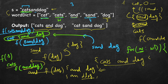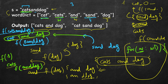The two solutions are 'cat sand dog' and 'cats and dog'. The loop continues for remaining words in the dictionary: 'and' — the first three characters of the input do not start with 'and', so skip. Next word — first four characters do not match. Next word — does not match. So we are done and these are the only two solutions, which we return.